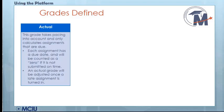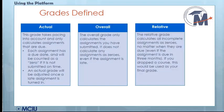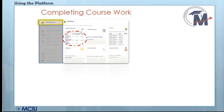Edgenuity calculates grades in three different ways: Actual, Overall, and Relative. MVP uses the Actual Grade for tracking and reporting progress to you, your parents, and your school. As was mentioned before, to access your course, you will click on the name of the course on the Dashboard screen.